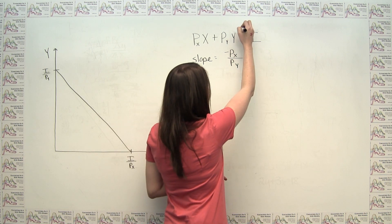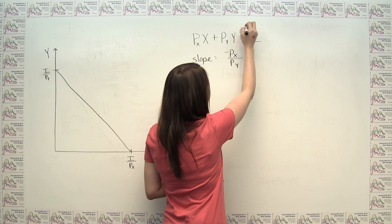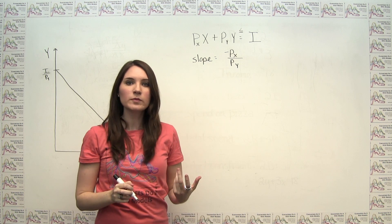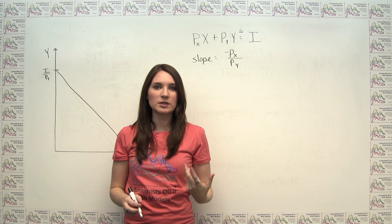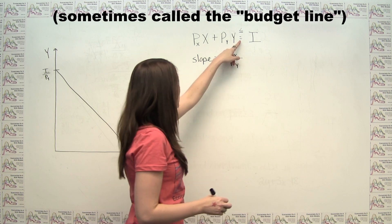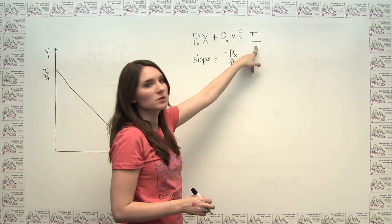Technically, we said that the budget constraint is that this has to be less than or equal to income, but when we go to graph it, what we're graphing is actually the boundary of that budget constraint. So we're graphing the part where this is strictly equal to income.